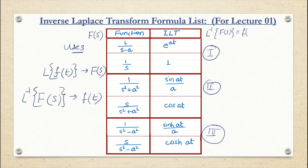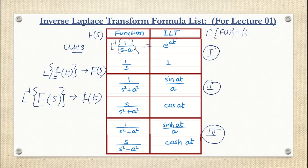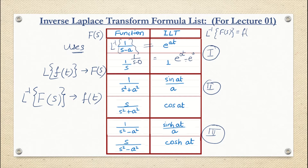Set one has the form 1/(s − a). If you perform the inverse Laplace transform of this function, you get e^(at). This connects back to Laplace transform where the Laplace transform of e^(at) gives the s-shift, which is 1/(s − a). For the second formula in set one, inverse Laplace of 1/s gives 1, which you can derive by setting a = 0: e^(0·t) = 1.